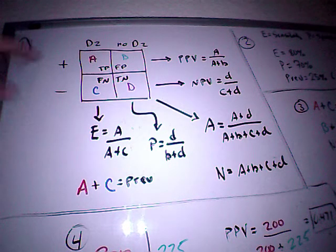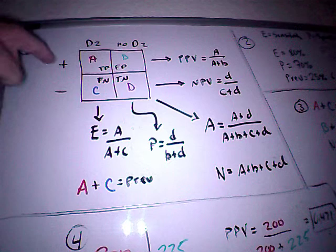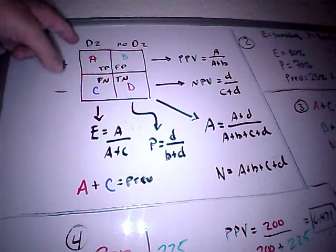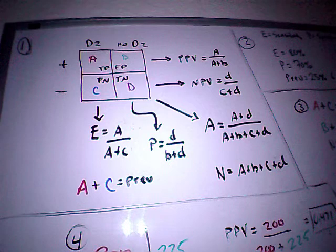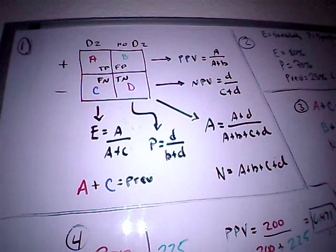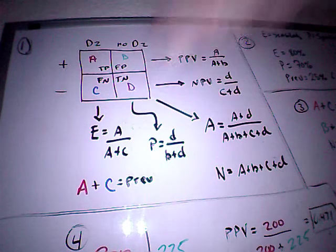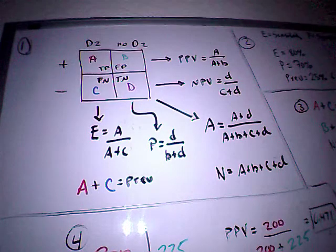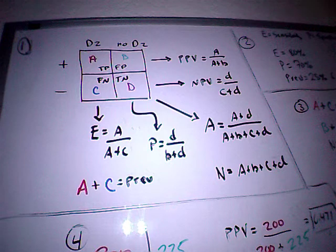I'm going to have a positive test result up here, negative test result here. I'm going to have people with the disease and people without the disease here. And then from the data that we put in this box, we'll have our true positives, our false negatives, our false positives, and our true negatives.